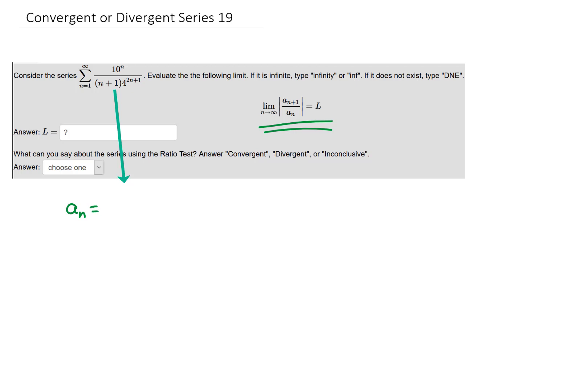Well from our series we know that a_n is 10^n over (n+1) times 4^(2n+1). We can get a_{n+1} just by replacing all of our n's with n+1's.